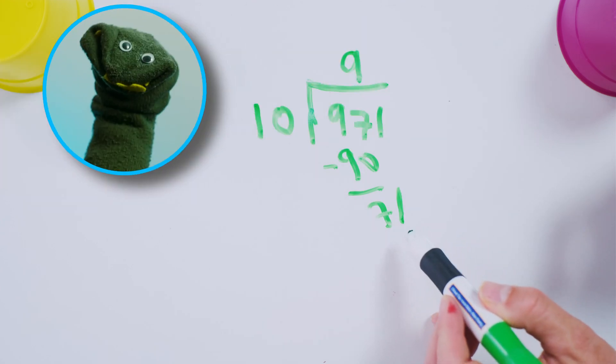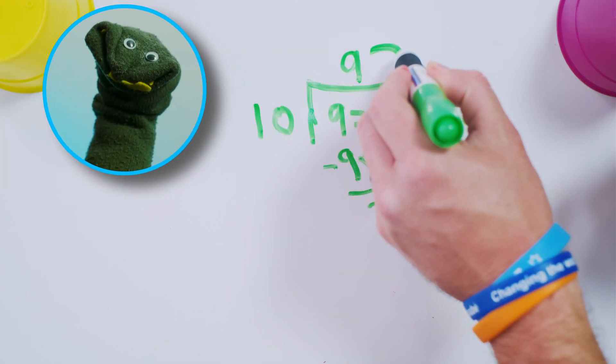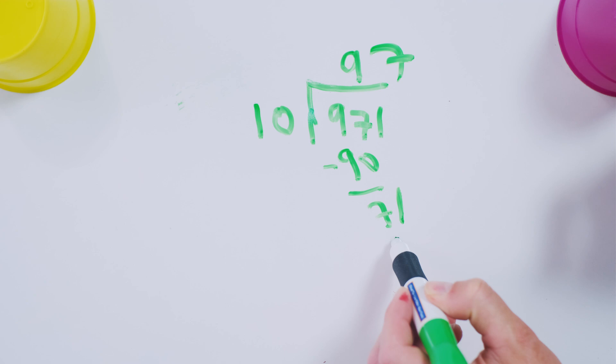Now how many tens are in 70? Well, that's seven. Okay, we're making progress here.